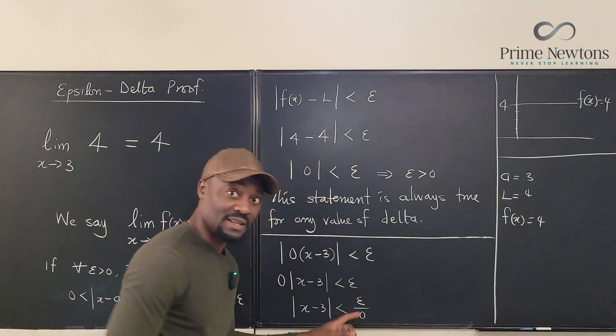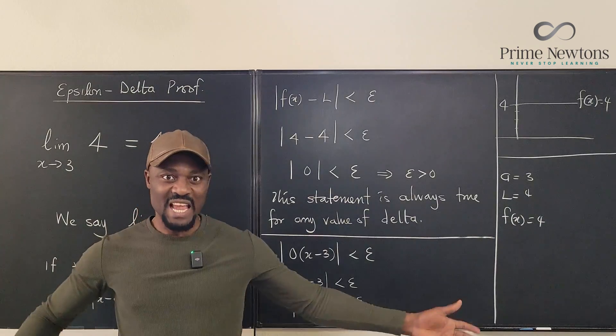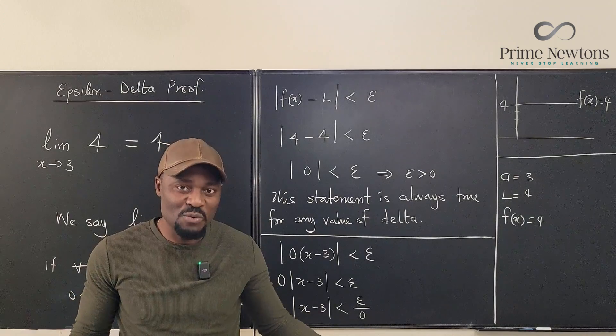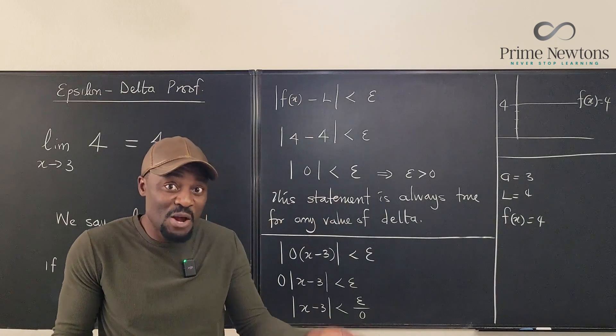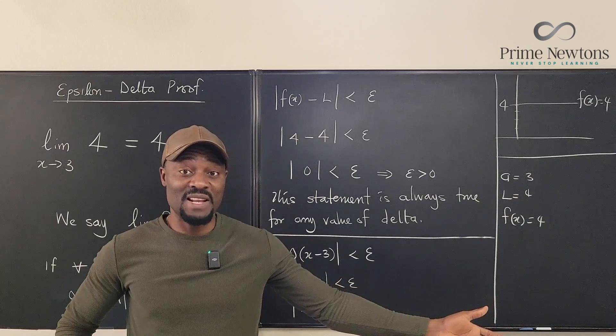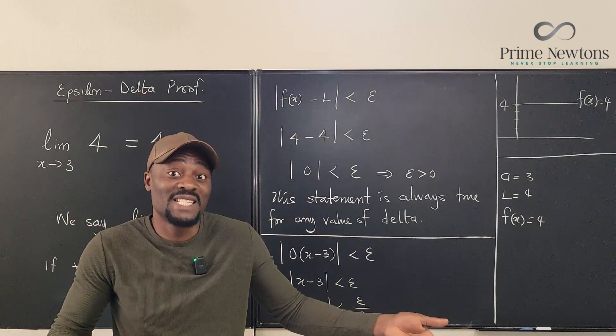This is infinity. So if you want to guess delta, delta is infinitely large. Or the number of options you have for delta, you're not restricted. As long as the number is less than infinity, you can use it. The only number you can't use is infinity itself.